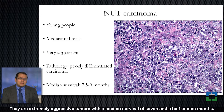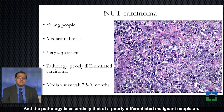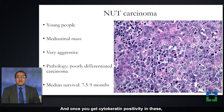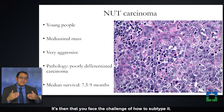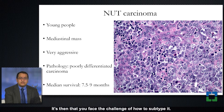They are extremely aggressive tumors with a median survival of seven to nine months. The pathology is essentially that of a poorly differentiated malignant neoplasm. Once you get cytokeratin positivity, you'll come to poorly differentiated carcinoma, and it's then that you face the challenge of how to subtype it.